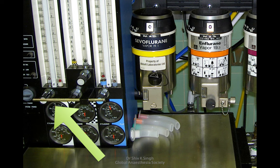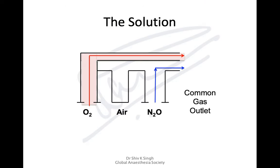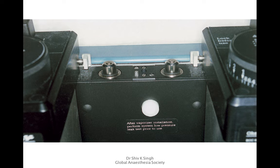The ultimate solution was to deliver oxygen separately and directly to the common gas outlet, independent of air and nitrous oxide. This solves all problems — you don't need to worry about the position of the oxygen flow meter (upstream or downstream), as it connects directly to the common gas outlet.